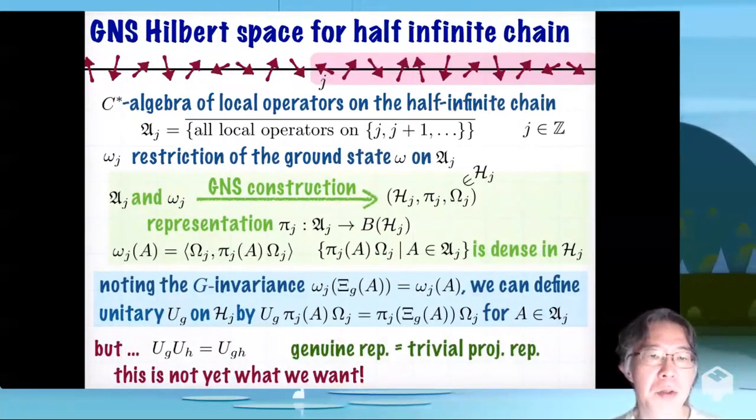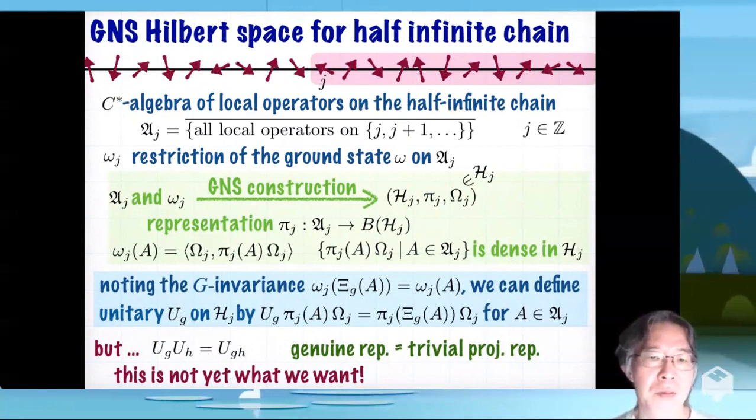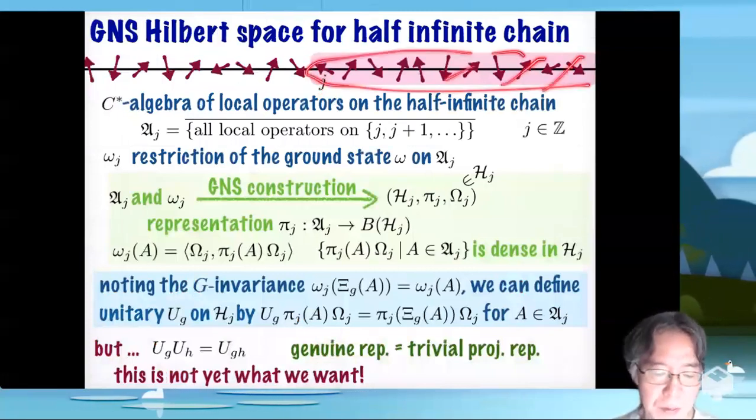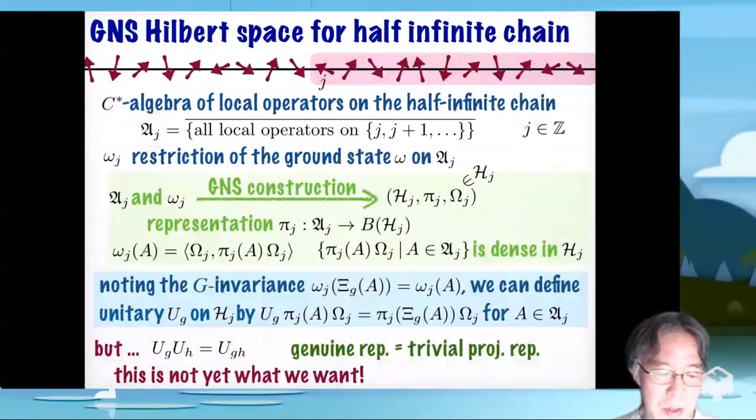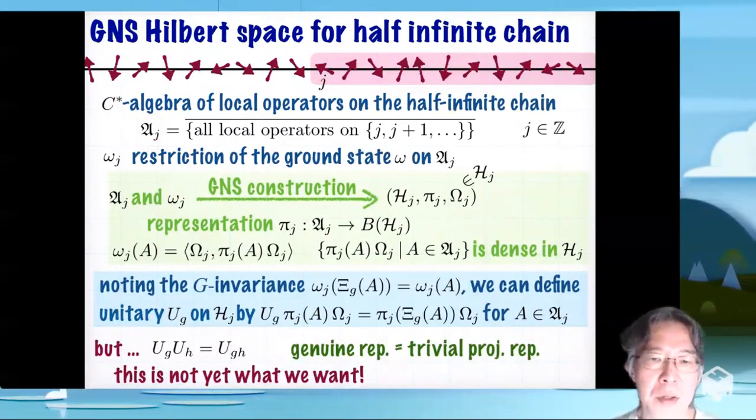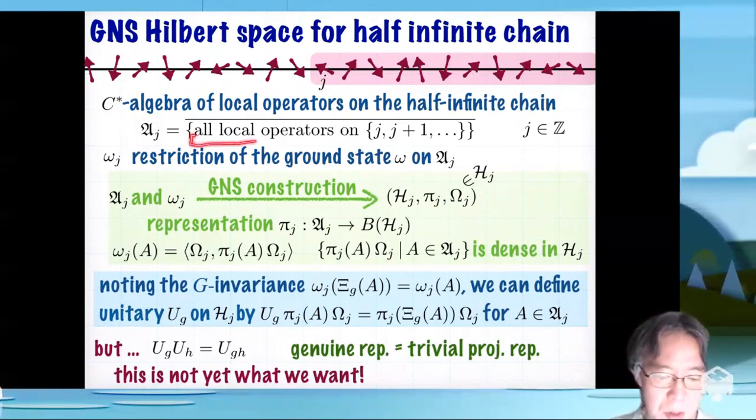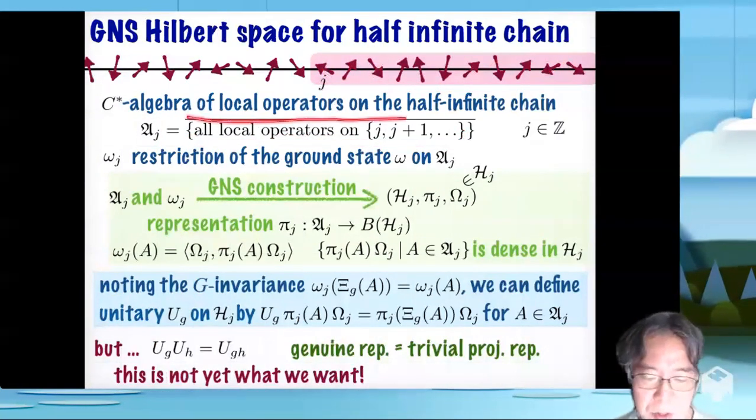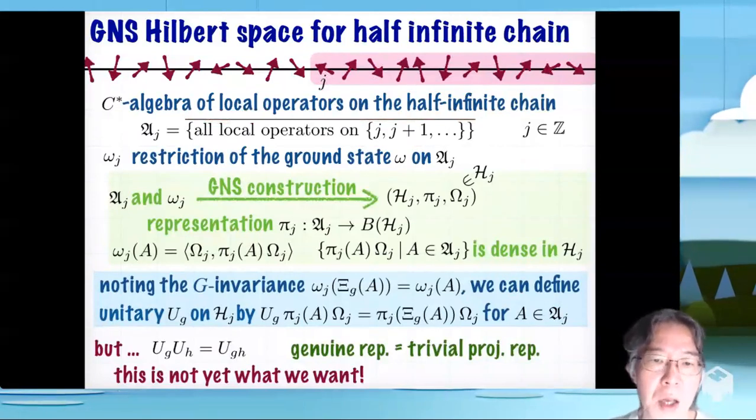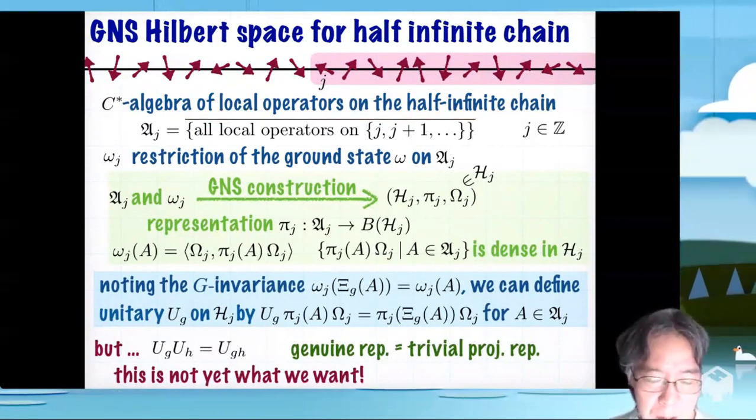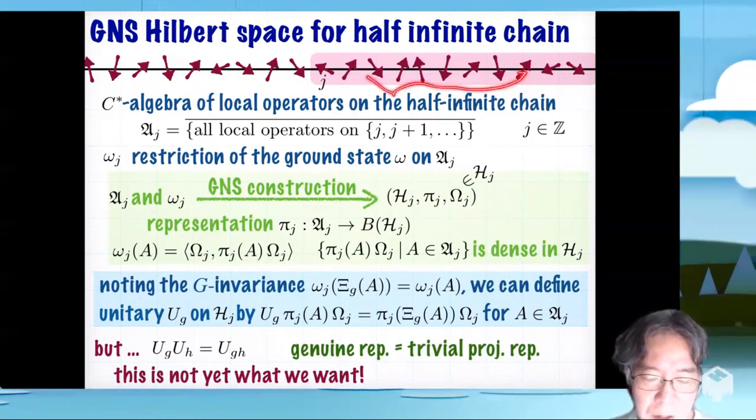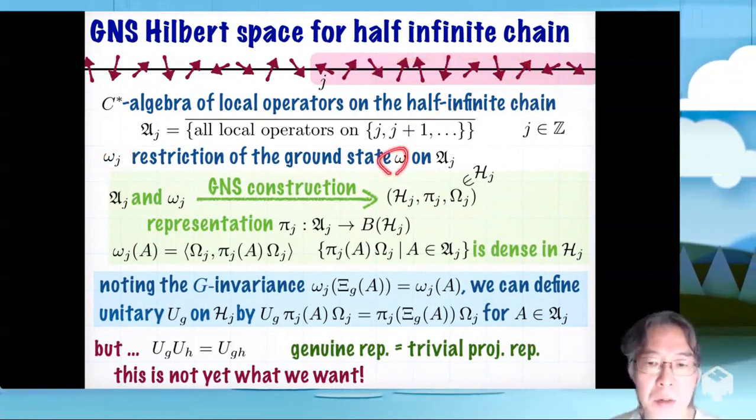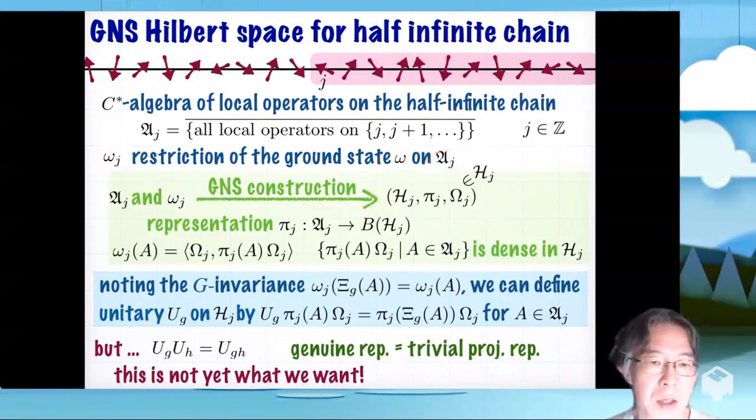So this is a new slide. I start by constructing something called GNS-Hilbert space for half infinite chain. I pick an arbitrary site j and concentrate on this half infinite chain. By ℛⱼ, I denote the C* algebra of local operators on the half infinite chain. It's basically the set of all local operators that live on this half infinite chain. And by ωⱼ, I denote the restriction of the ground state ω on this C* algebra ℛⱼ.